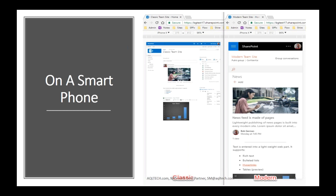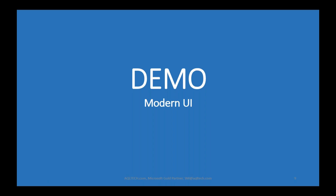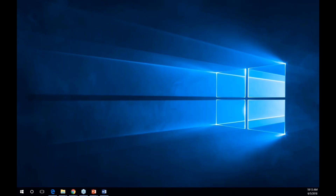Modern sites are built with mobile usage in mind. You can browse the site from tablets, cell phones, or anywhere — you don't even have to use the mobile apps. Mobile access is not just nice to have anymore, but mandatory. Personally, I access pretty much everything from my cell phone. If you want to access modern pages right from your cell phone, it's going to be much faster and better than even accessing from the mobile app.